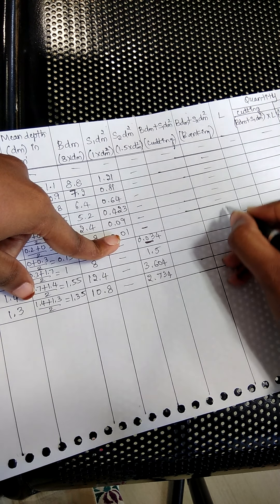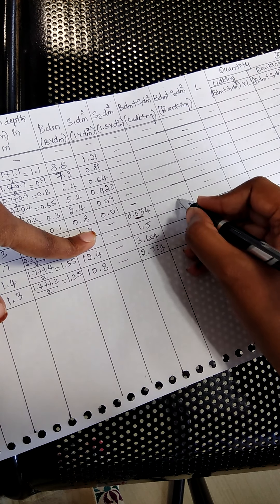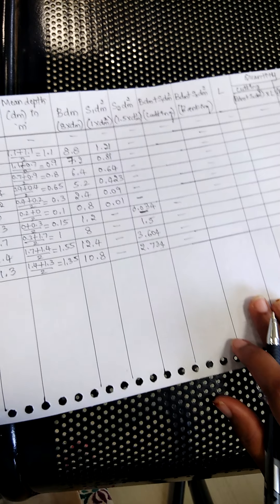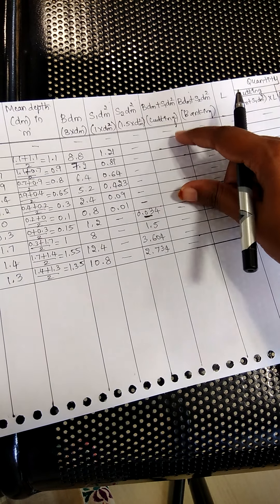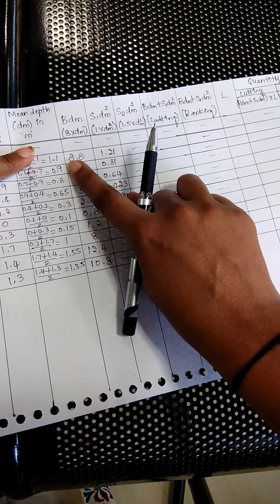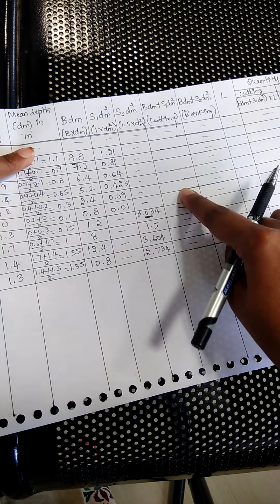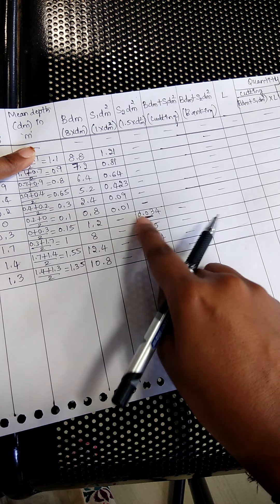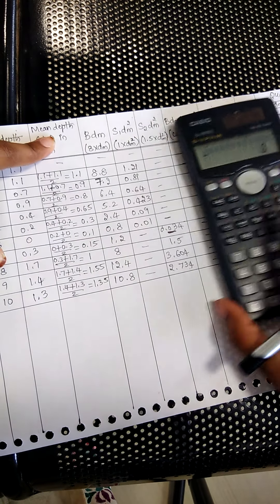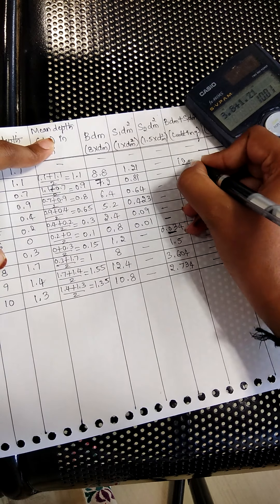All the initial values come under cutting, so the remaining rows should be put as dash. From a certain point onward, the readings come under banking, so put dash for the cutting portion there to avoid confusion. The gap is filled by adding b·dm plus s1·dm² to get the area of cutting. For example, 8.8 plus 1.21 gives 10.01.